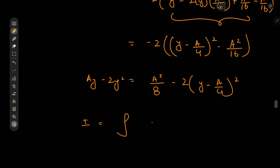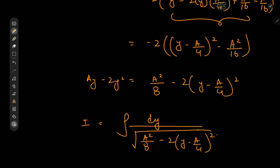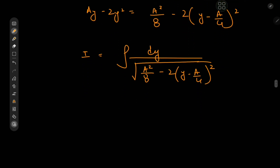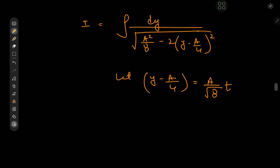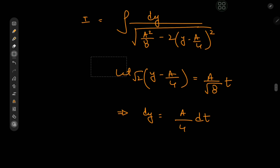Our target integral I equals the integral of dy divided by the square root of a²/8 minus 2(y minus a/4)². Now all we need is a substitution. We let y minus a/4 equal to (a/√8)·t, so that dy equals (a/√16)·dt, which is (a/4)·dt.